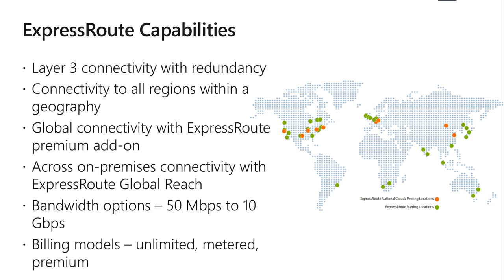One benefit is on-premises connectivity with ExpressRoute Global Reach. You can enable ExpressRoute Global Reach to exchange data across your on-premises sites by connecting your ExpressRoute circuits — that's what they're called in Azure, 'ExpressRoute circuits,' not just 'ExpressRoute.' For example, if you have a private data center in California connected to ExpressRoute in Silicon Valley and another in Texas connected to ExpressRoute in Dallas, with Global Reach you can connect those private data centers together, and traffic transfers through the Microsoft network.